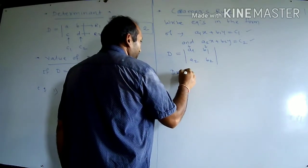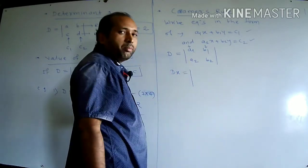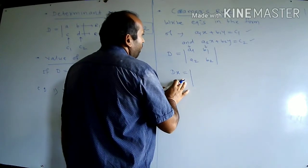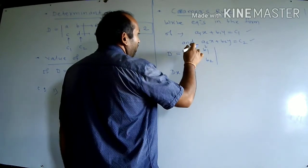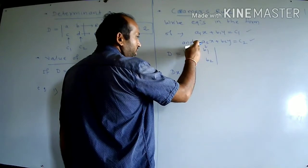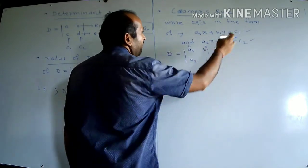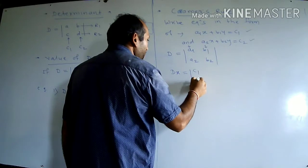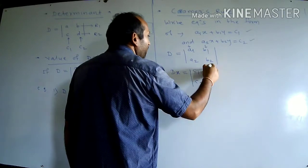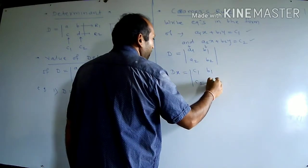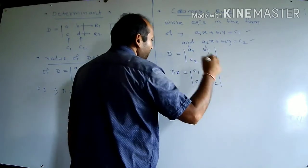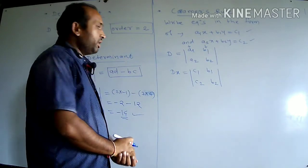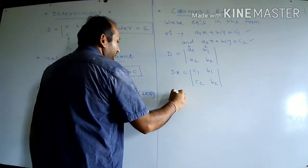The second determinant is DX. In DX, replace only the first column (the coefficients of X) with the constants C1, C2, while the second column B1, B2 remains as it is. Find its value using the same formula.